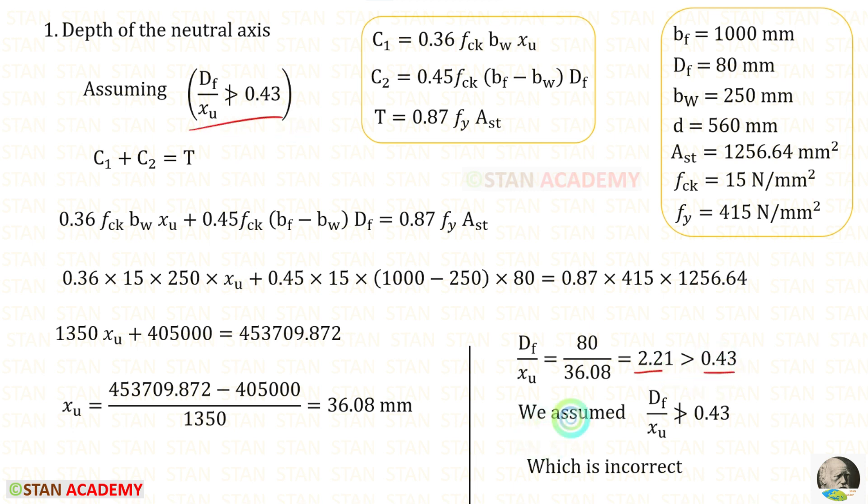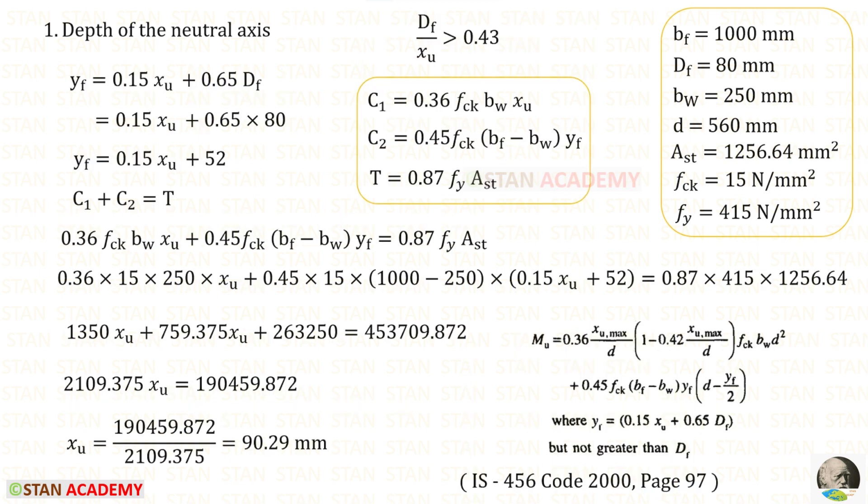Initially, we assumed that Df upon xu is not greater than 0.43. This assumption is also incorrect. Now we know that Df upon xu is greater than 0.43. In this case there will be one change. For C2, there will be a change. Instead of Df, we have to apply Yf.